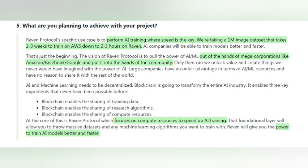With the help of Raven Protocol, AI companies will be able to perform much better and faster. Another great advantage of Raven Protocol is that it will pull out the power of artificial intelligence and machine learning from the hands of big companies like Amazon, Facebook, and Google, to the hands of the community. To achieve this, Raven Protocol built their structure on blockchain, whose main purpose is to be decentralized and accessible to all.